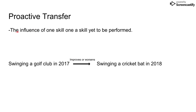Next is proactive transfer, which is the influence of one skill on a skill that is yet to be performed. For example, if you swing a golf club in 2017, it could either improve or worsen your swing of a cricket bat in 2018. The key point is that it influences the future skill either way — so what you do in 2017 will affect your technique when you decide to practice swinging a cricket bat in 2018.